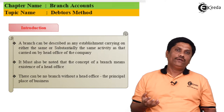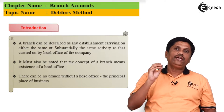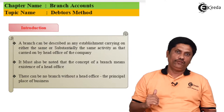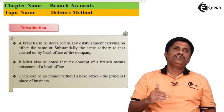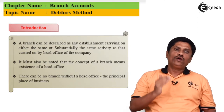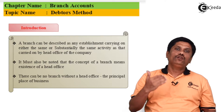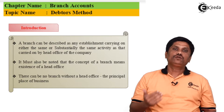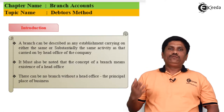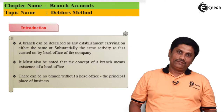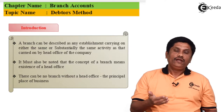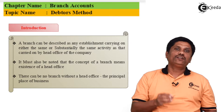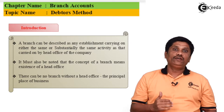So what does branch mean? A branch is like the head office but at some different place — geographically it is situated away from the head office. It is doing either the same activities of the head office or substantially the same activities, but at a different location. So a branch is like a child of the head office which is situated geographically away from the head office.